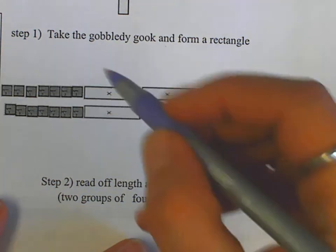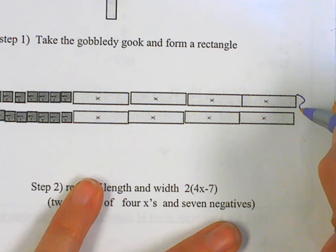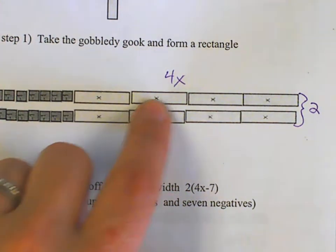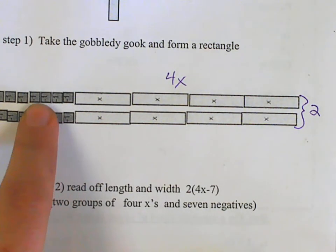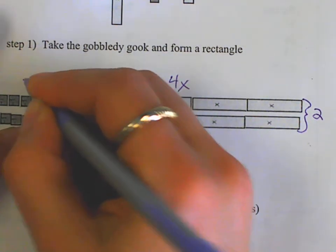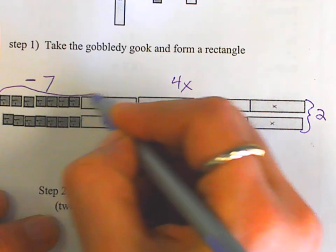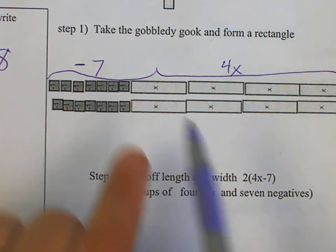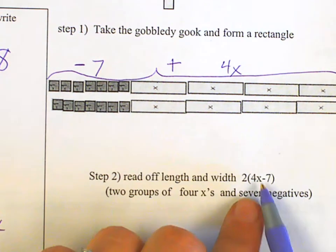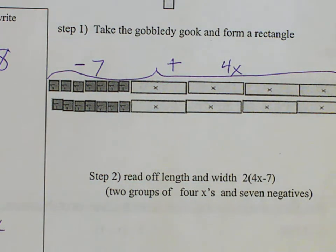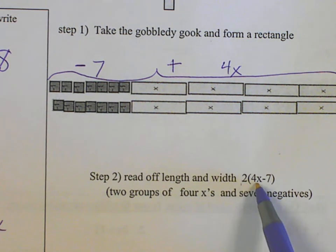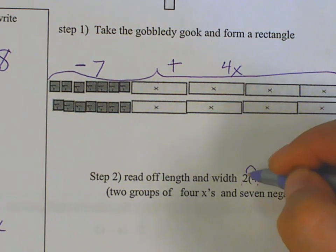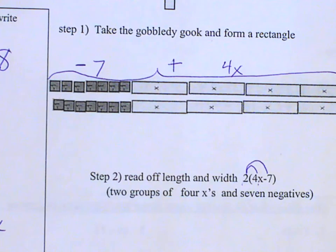On the side I have two rows, and in each row I see a 4x and 7 negatives. So I have two groups of the quantity 4x minus 7. I can write it as 2(4x − 7) — that's the more common form. Let's check: 2 times 4x is 8x, and 2 times negative 7 is negative 14. That confirms our answer. All we're doing is reversing what we've been doing.